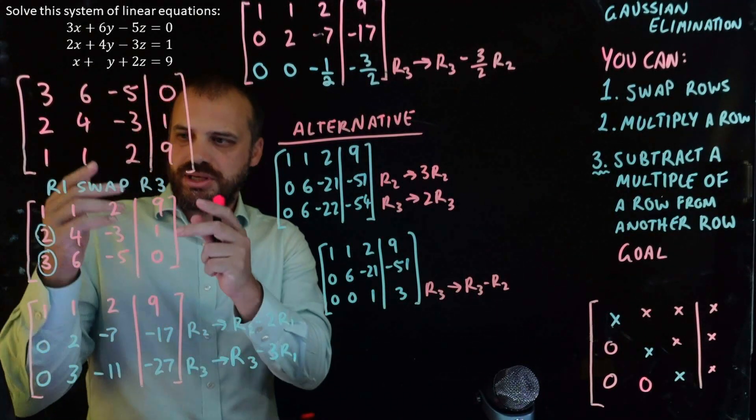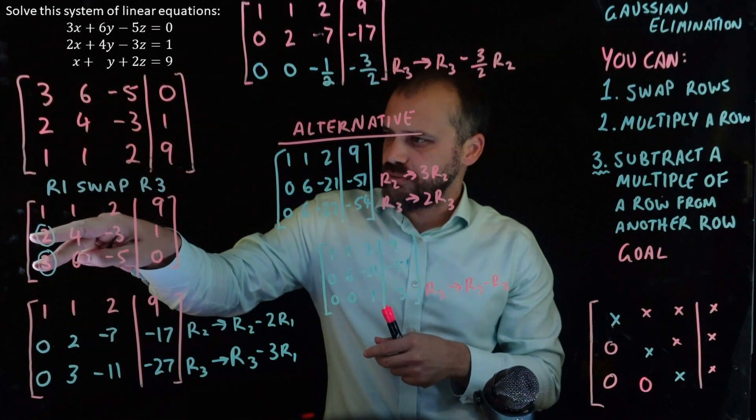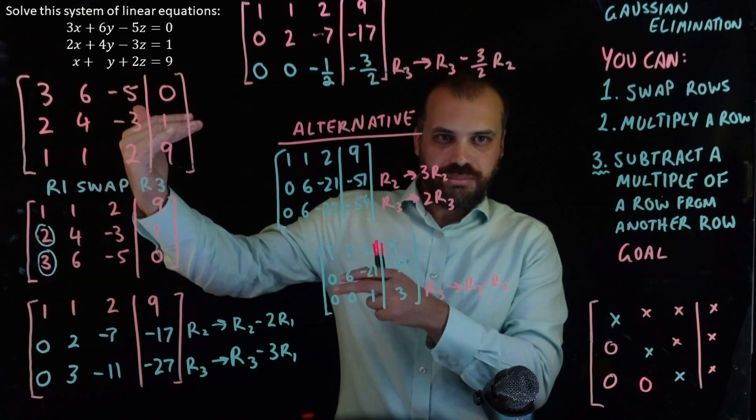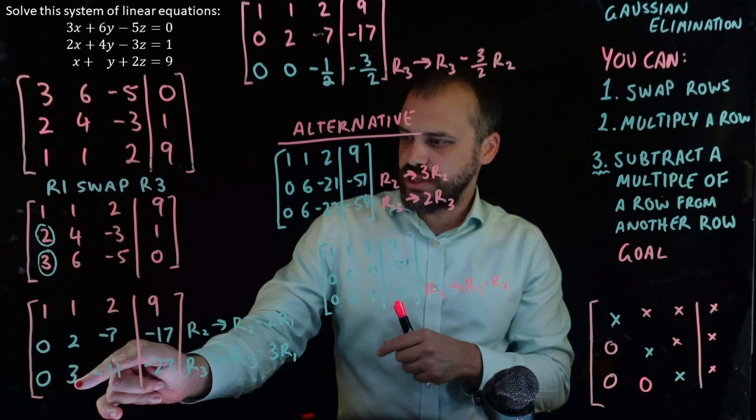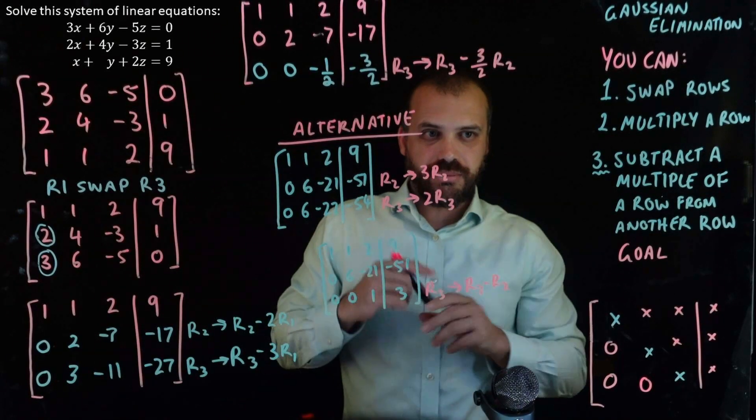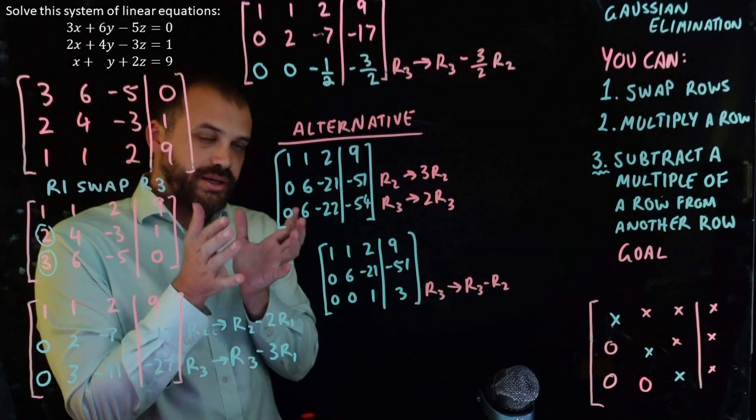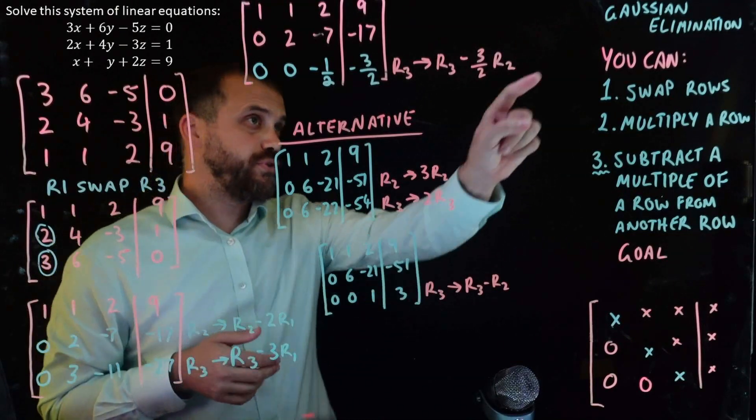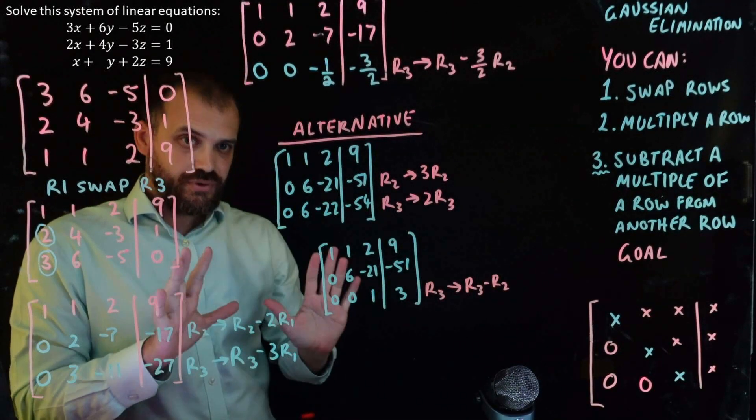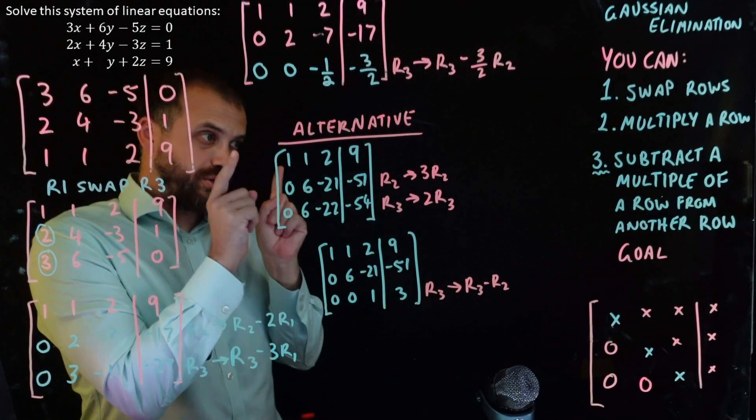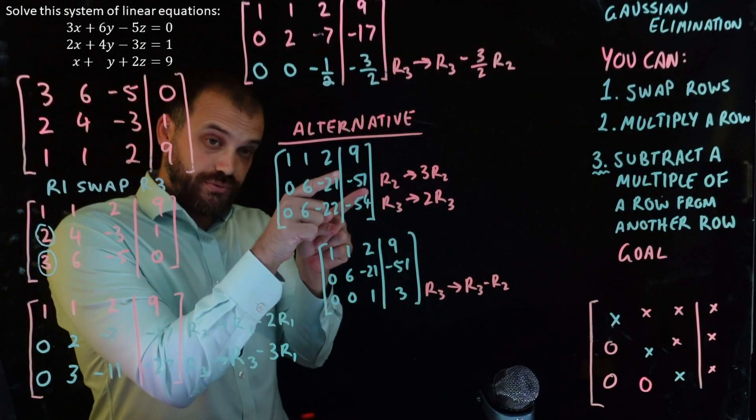But I think using this method here is a little more like formulaic. You won't get too lost in it. Because here, all we did was say, I'm going to get rid of this and this by subtracting some multiple of row 1. And then I want to get rid of this by subtracting some multiple of row 2.